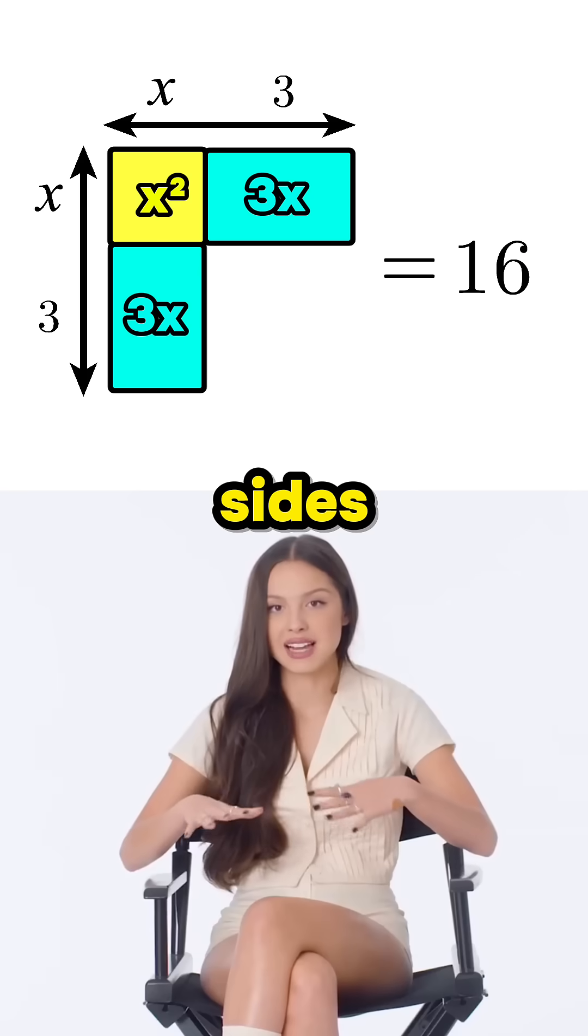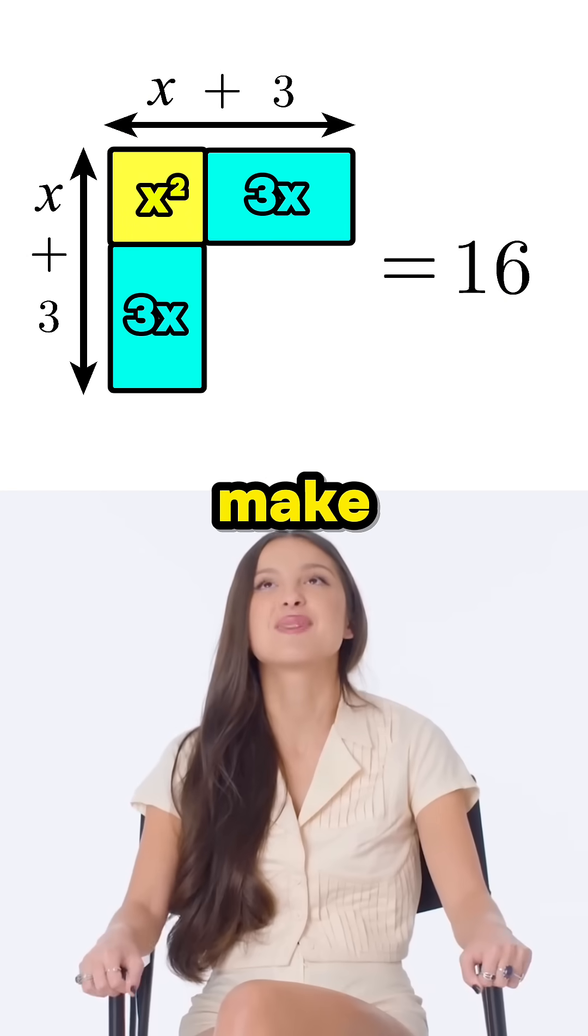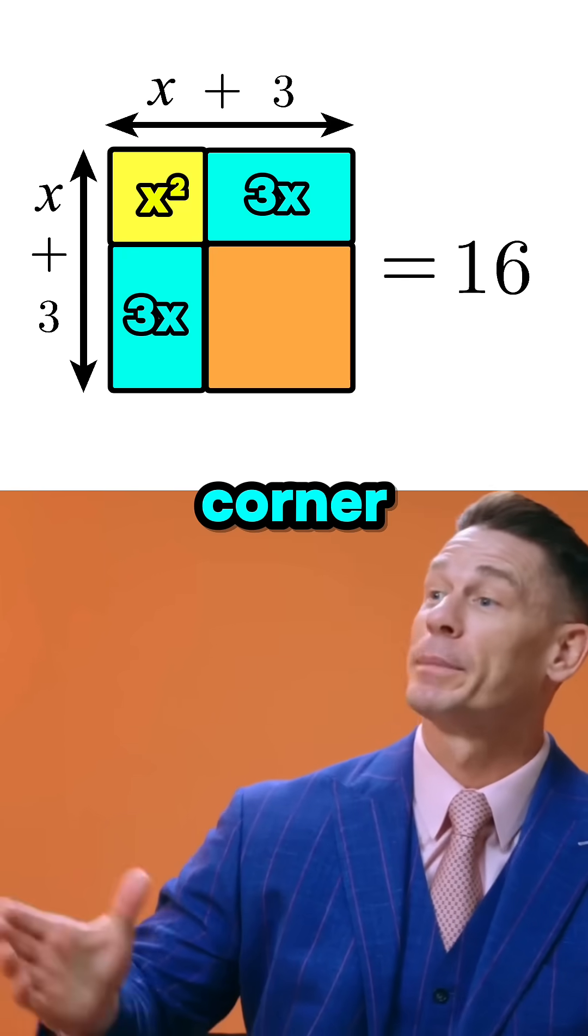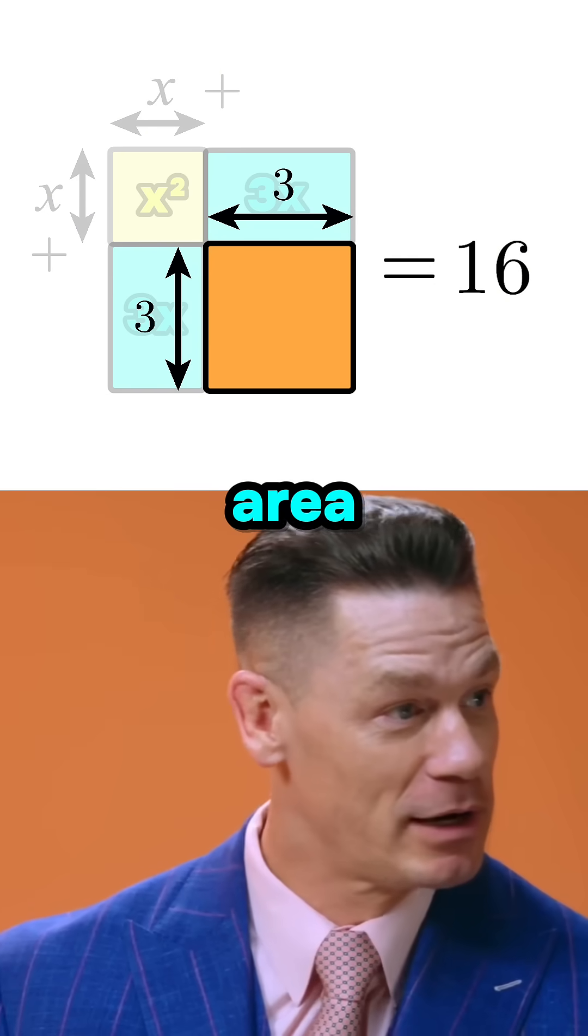Yeah, and see how these long sides now have length x plus 3? We can now make this into a perfect square. But to do that, we need to add this corner piece, and that's 3 times 3, see? So its area is 9.